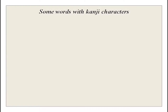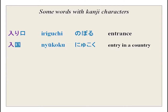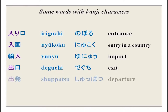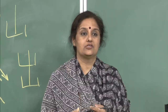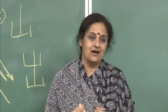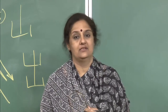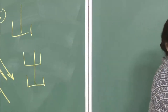Some words using the kanji characters we have done: iriguchi, nyuukoku, yuunyu, deguchi, shuppatsu, jibika. I read these out so you get the pronunciation and see how kanji characters are used. You can also make sentences which will help in conversation. Please go through these, read them, try to write them, and practice at home.